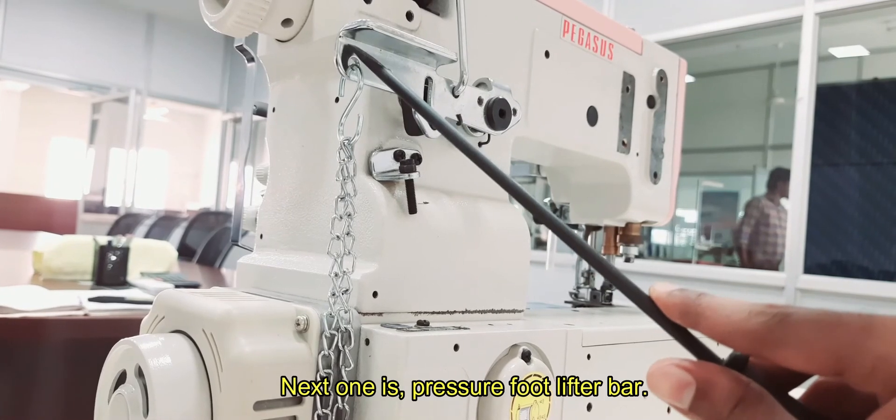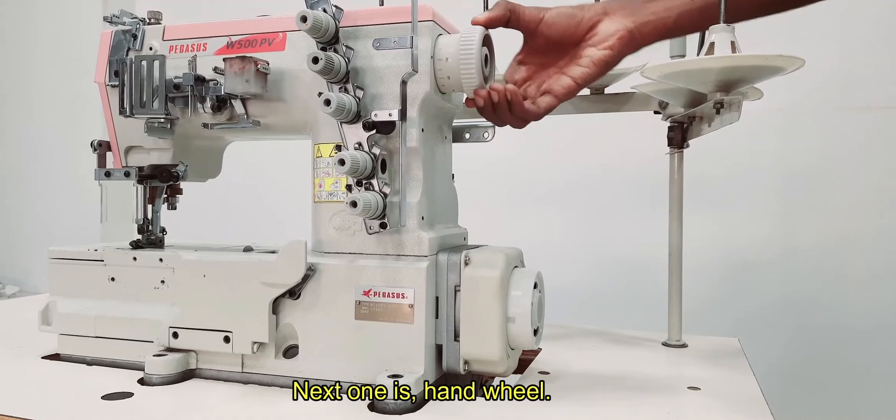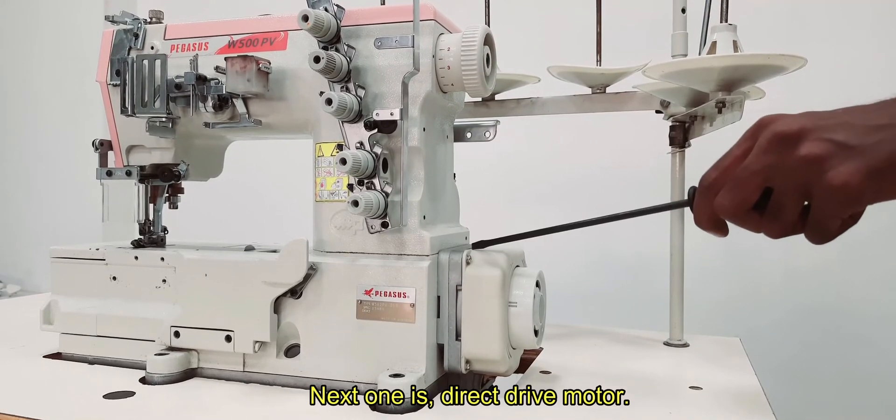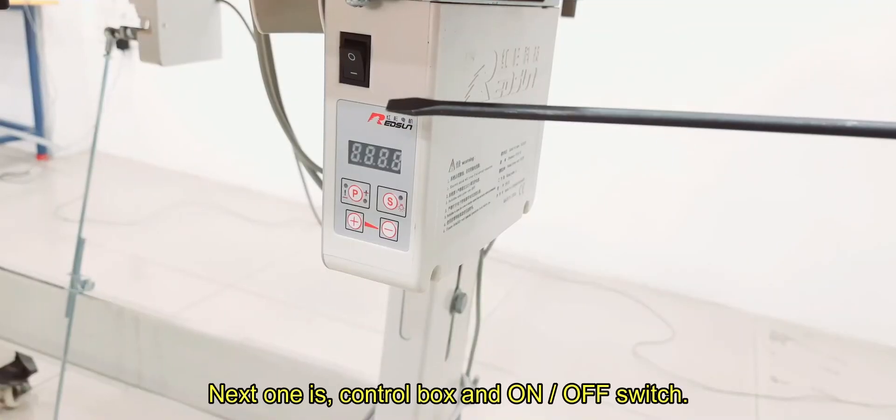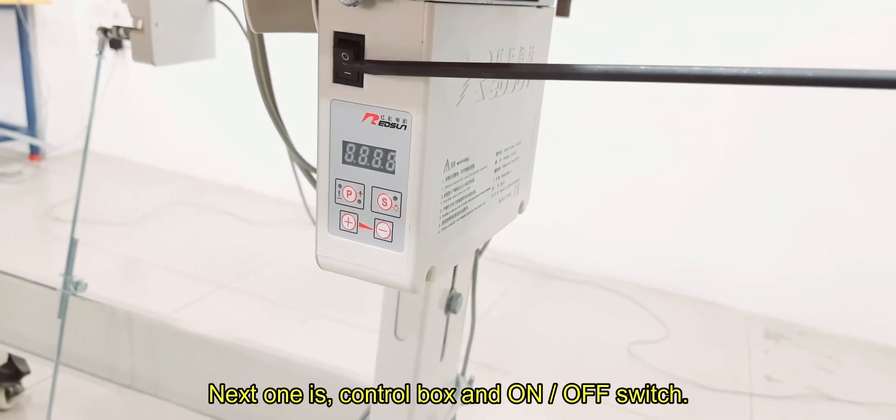Next one is pressure foot lifter bar. Next one is hand wheel. Next one is direct drive motor. Next one is control box and on/off switch.